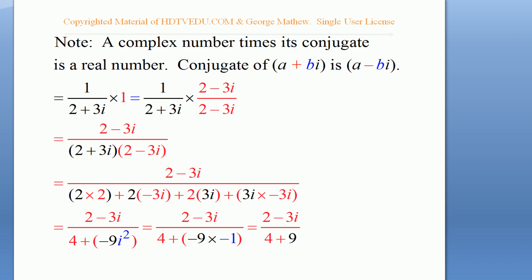So we change the sign in the middle to negative. If you write the number 3 as a plus bi, then b will be 0. If you write the number 2i as a plus bi, then b will be 2 and a will be 0. If you write the number 2 plus 3i as a plus bi, then a will be 2 and b will be 3.